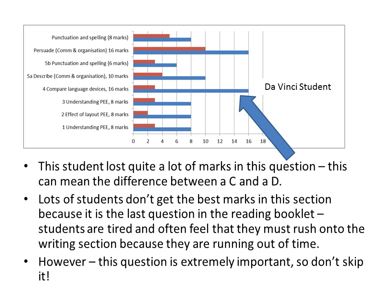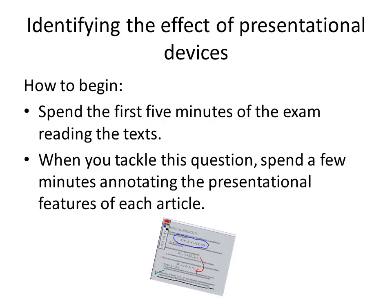This student would have just done a simple comment about some of the presentational features — they might have recognised that there was a photograph or a logo, but they didn't use PEEED to write about those effects and they didn't compare them. That's why this student only got 3 marks. So it's very important that we don't skip this question and that we allow enough time to complete it adequately.